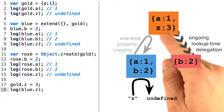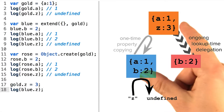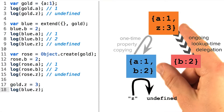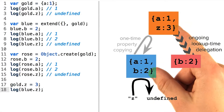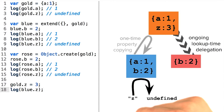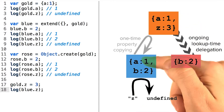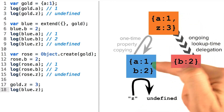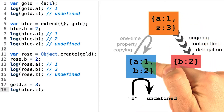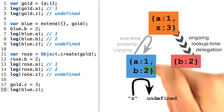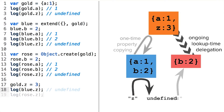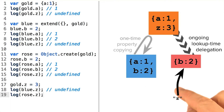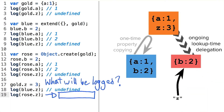The copy operation was one time, so the relationship between gold and blue was over immediately. All that remains of those cloning efforts is this A property that we copied some time ago. But what do you think will happen when we log the Z property of the rose object?